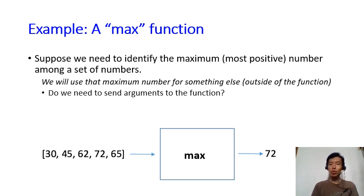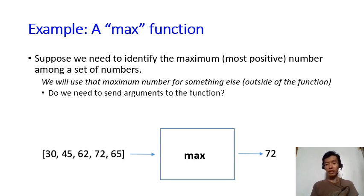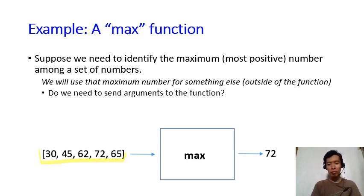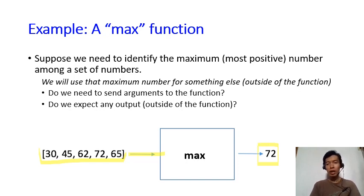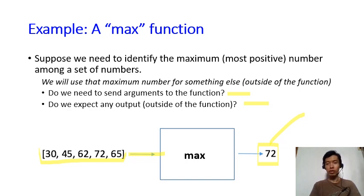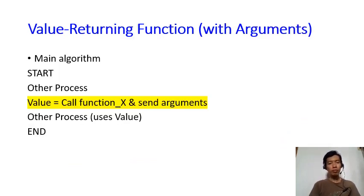Let's ask ourselves some questions. First: do we need to send arguments to the function? The answer is obviously yes, because how are you going to find the maximum number if you're not given the list of numbers? So yes, you need to send the list as the arguments. Second: do we expect any output outside of the function? Yes — we expect the function to send out a value so the main algorithm can use it for something else. So yes, we need arguments, and yes, we expect output.